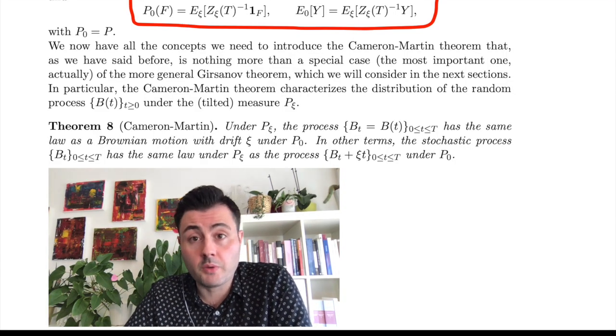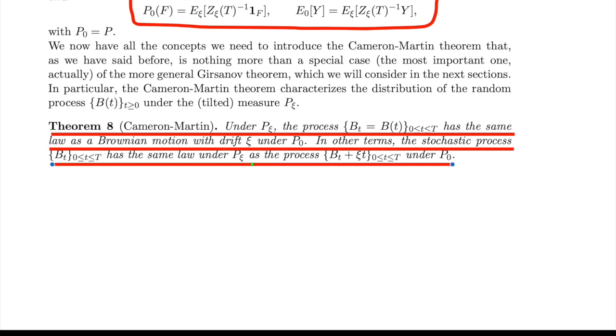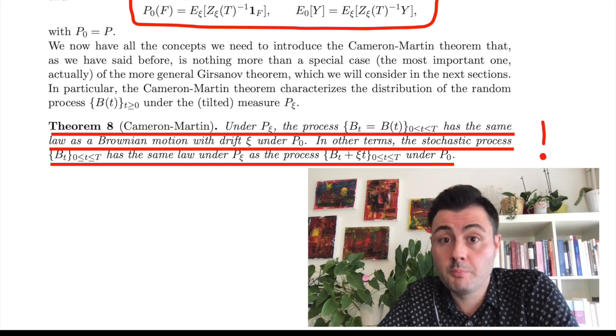The Cameron-Martin theorem links a Brownian motion with drift and a Brownian motion via the change of measure operation. The statement of the theorem is as follows: under P_ψ, the process B(t) — which for us is a standard Brownian motion — has the same law as a Brownian motion with drift ψ under P₀. In other words, the stochastic process B(t), the standard Brownian motion, has the same law under P_ψ as the Brownian motion with drift B(t) + ψt under P₀. This result is extremely important for us.